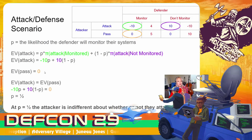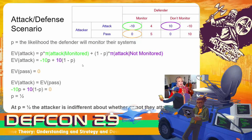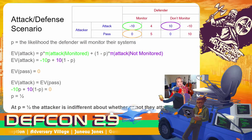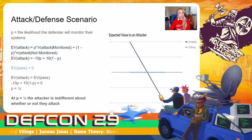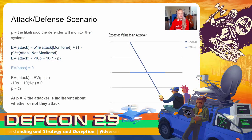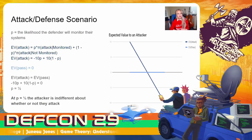The expected value of passing is always going to be equal to zero. When we set those equal to each other, we get p is equal to one half. This means that if it's 50-50 whether a system is monitored, the attacker is forced into indifference about whether or not they attack. We can see this with the graph here — essentially, the expected value to the attacker goes down as the likelihood that the system is being monitored increases. And so by changing p, defenders can actually force the attackers into indifference or into making a different decision.